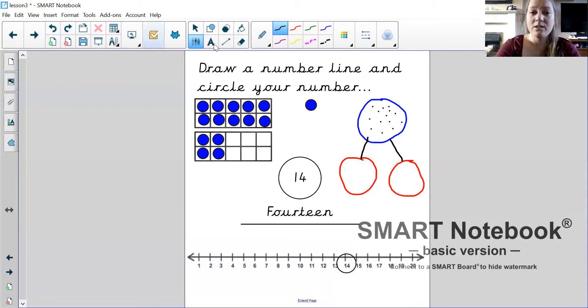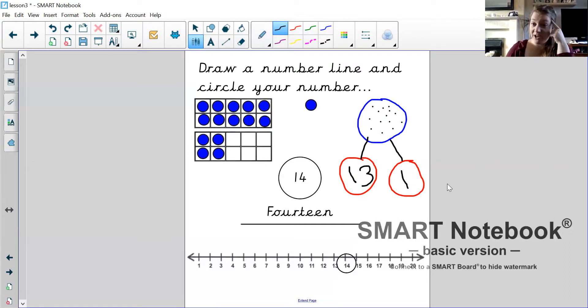There are lots of ways, like I said, that we can split our numbers. Another way I could split my number into two parts is—it's a bit wonky, isn't it?—13 and 1, because I know that 13 add 1 equals 14. 14 is the whole. 13 and 1 are the parts.